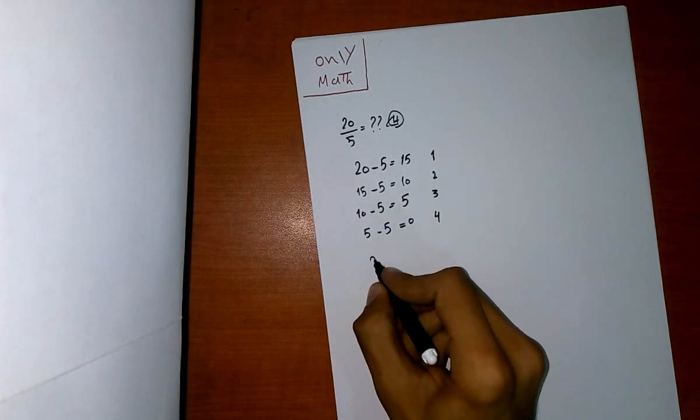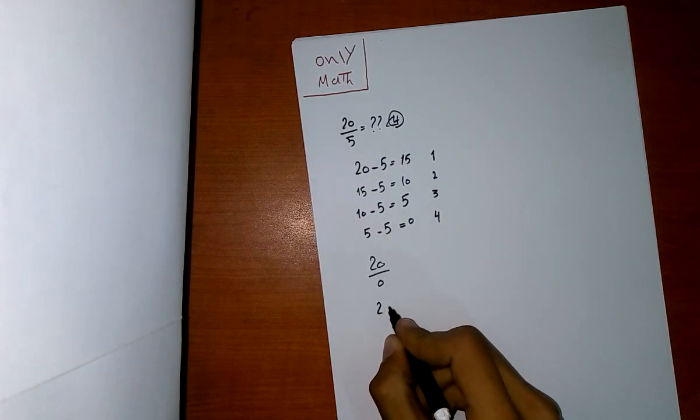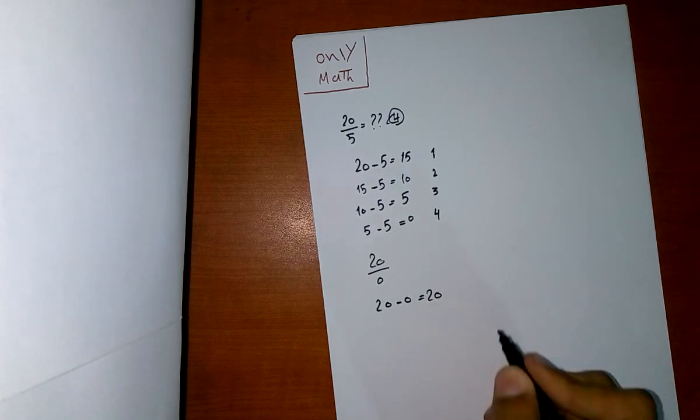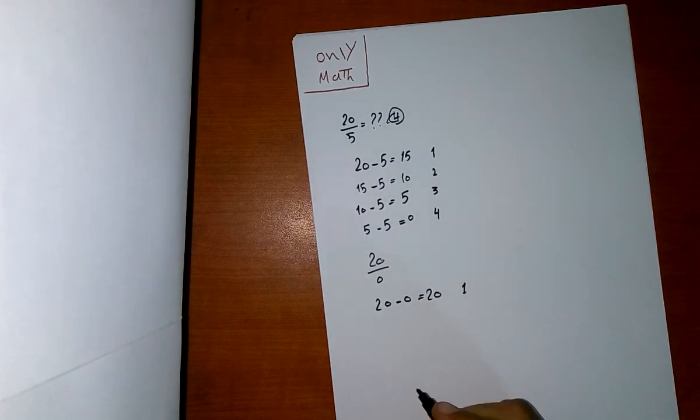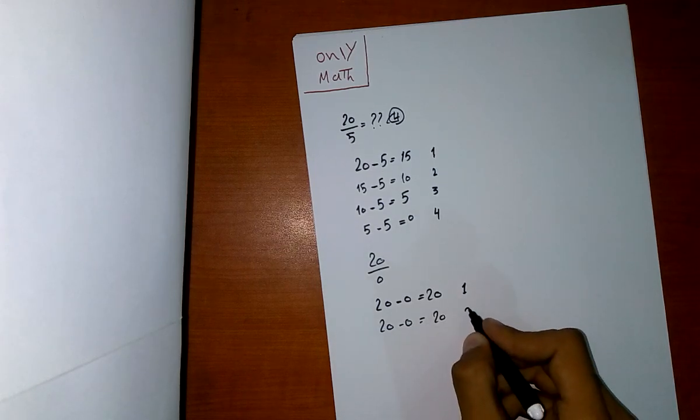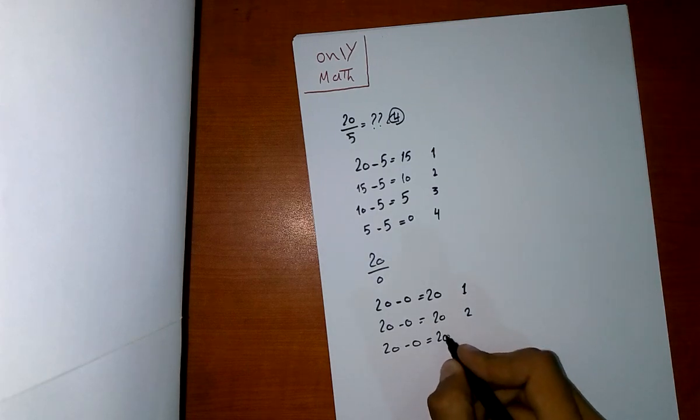you 20 divided by 0? You will say 20 minus 0 equals 20, number this as 1. 20 minus 0 equals 20, number 2. 20 minus 0 equals 20, number 3.